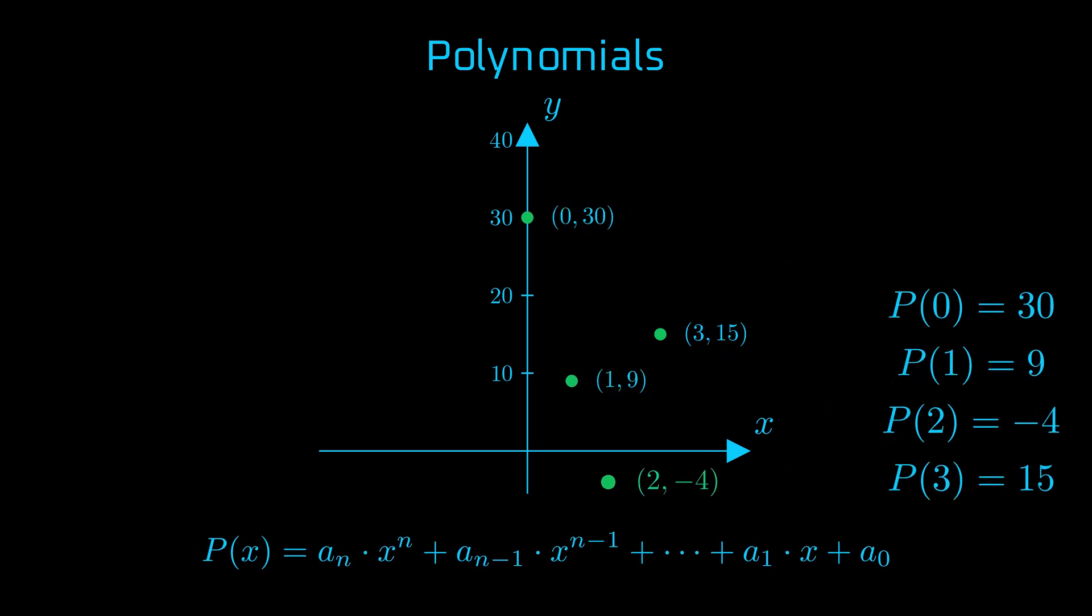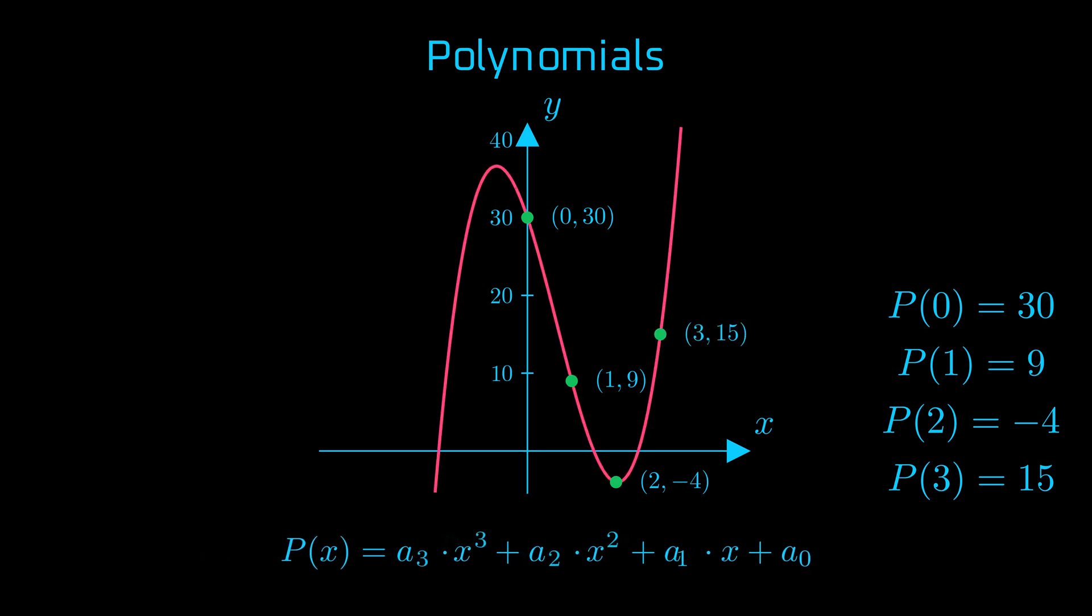This can be represented as evaluations of a polynomial p of x. Given these points, we can construct the polynomial that goes through them. Assuming it's of degree 3, it's going to be of this form.